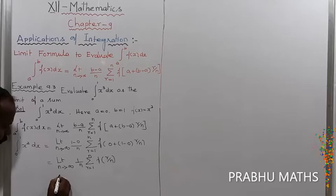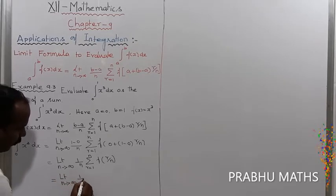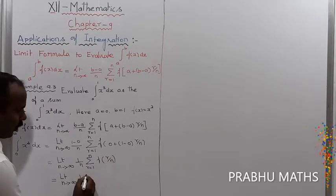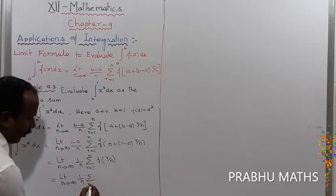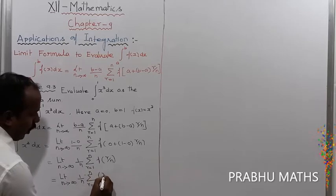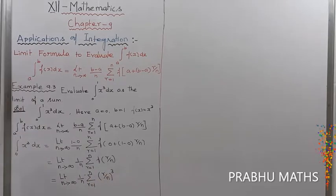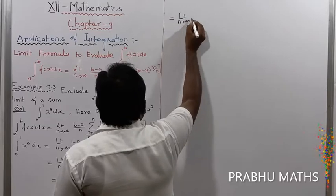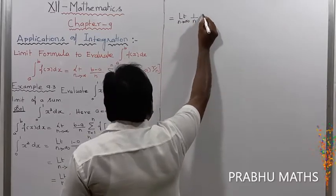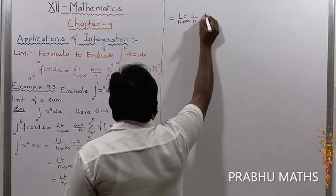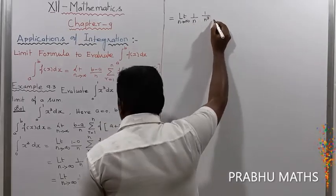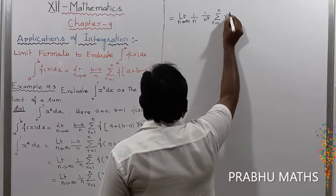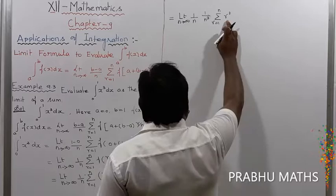Since f(x) = x³, we have f(r/n) = (r/n)³. So the expression becomes: limit as n tends to infinity of 1 by n, times summation for r from 1 to n of (r by n)³. Expanding, this gives limit n tends to infinity of 1 by n⁴ times the summation of r³, for r from 1 to n.